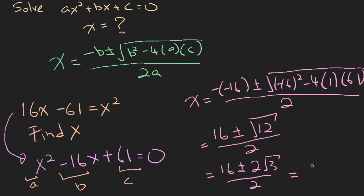So X is equal to 8 plus square root 3, and X is also equal to 8 minus square root 3.